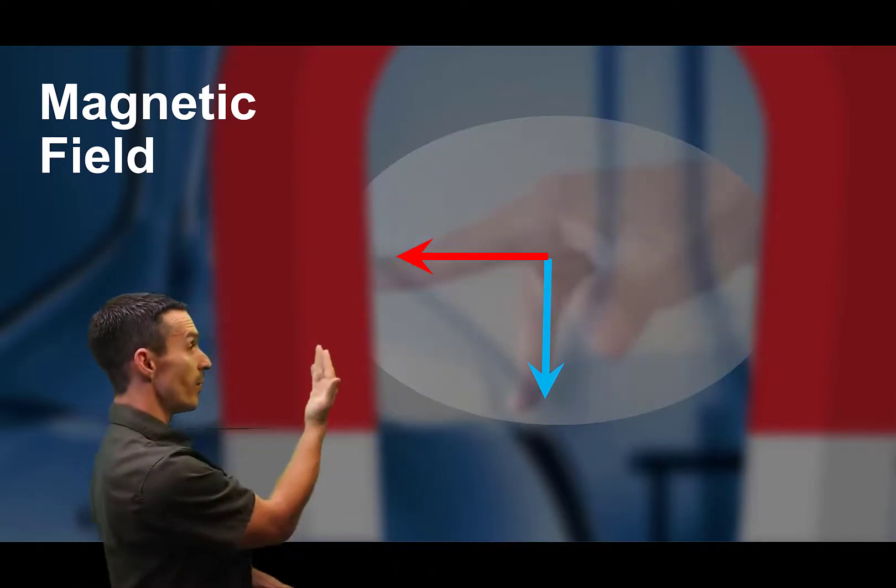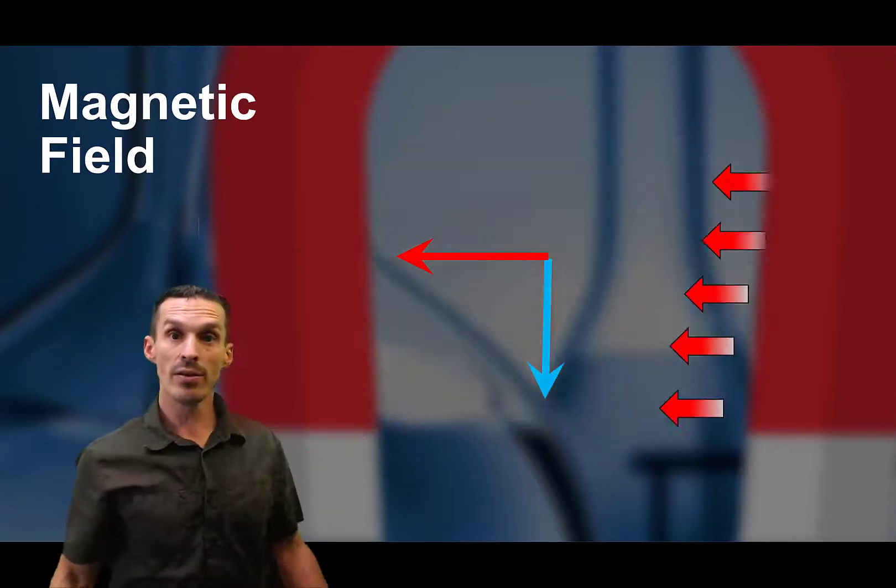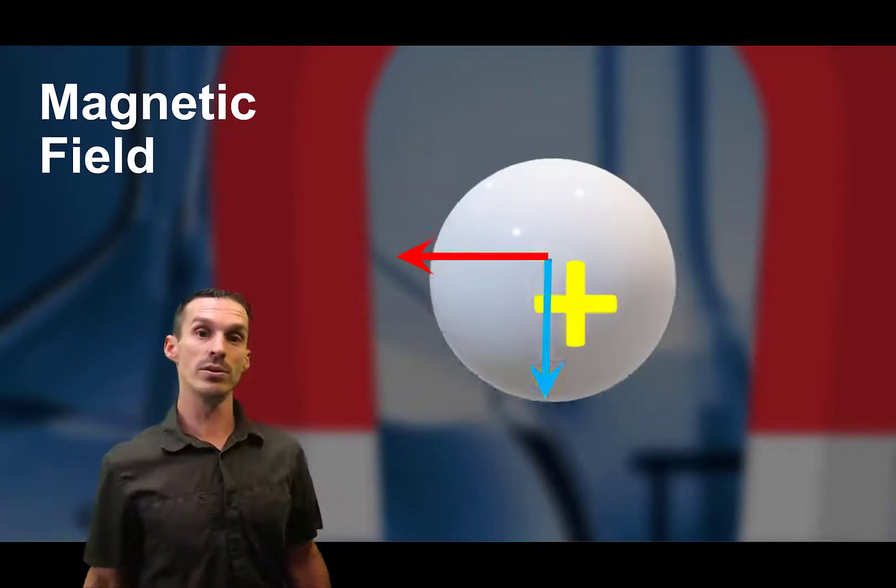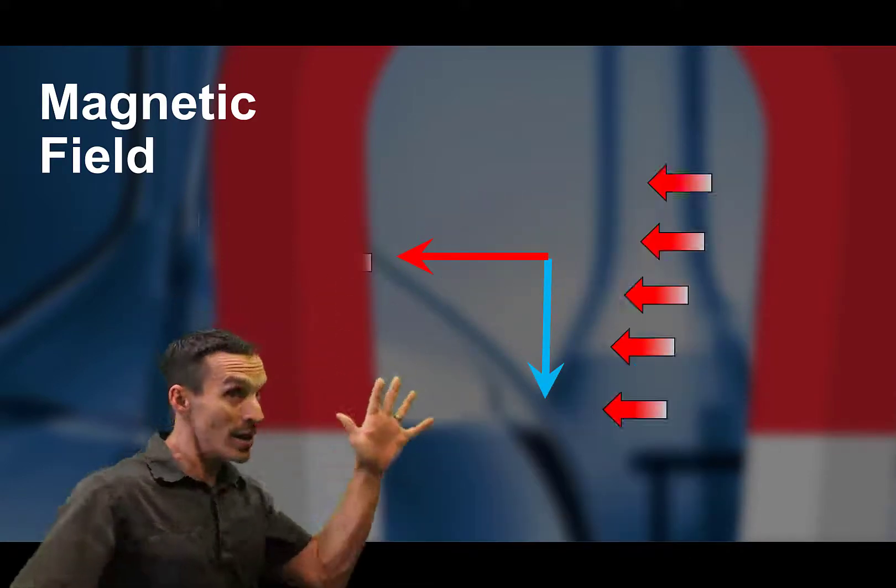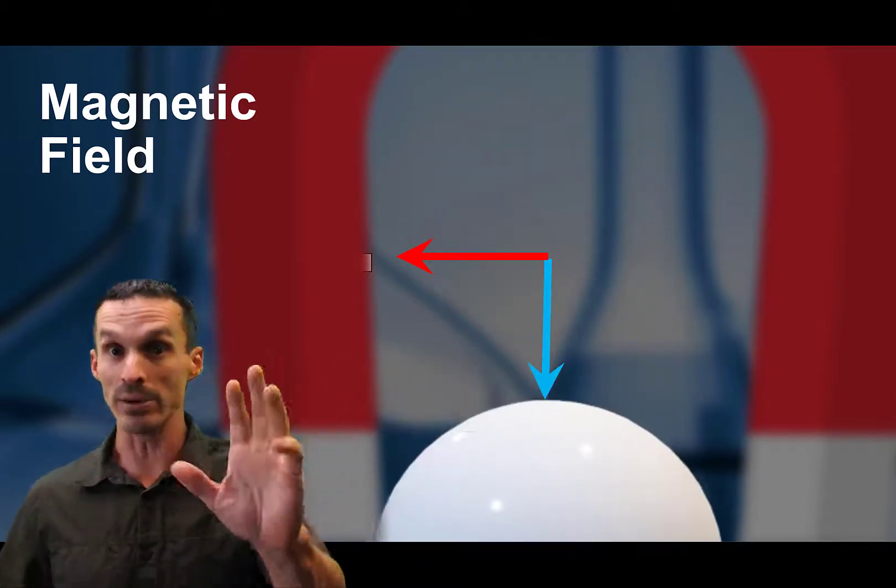So if we have the magnetic field pointing across this way, and our ions are moving down through it, then the force that's applied is actually pushing out towards you. So the ions are bending but coming out into the screen each time. A little hard to draw it, but you know what I mean, right?